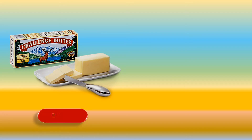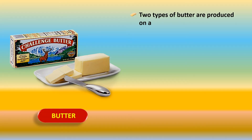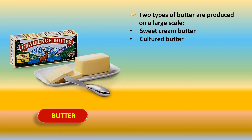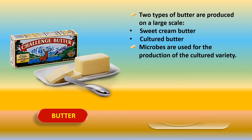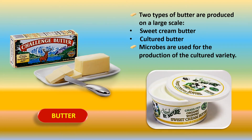Next we have the production of butter. Two types of butter are produced on a large scale: sweet cream butter and cultured butter. Microbes are used for the production of the cultured variety; sweet cream butter is a softer kind.